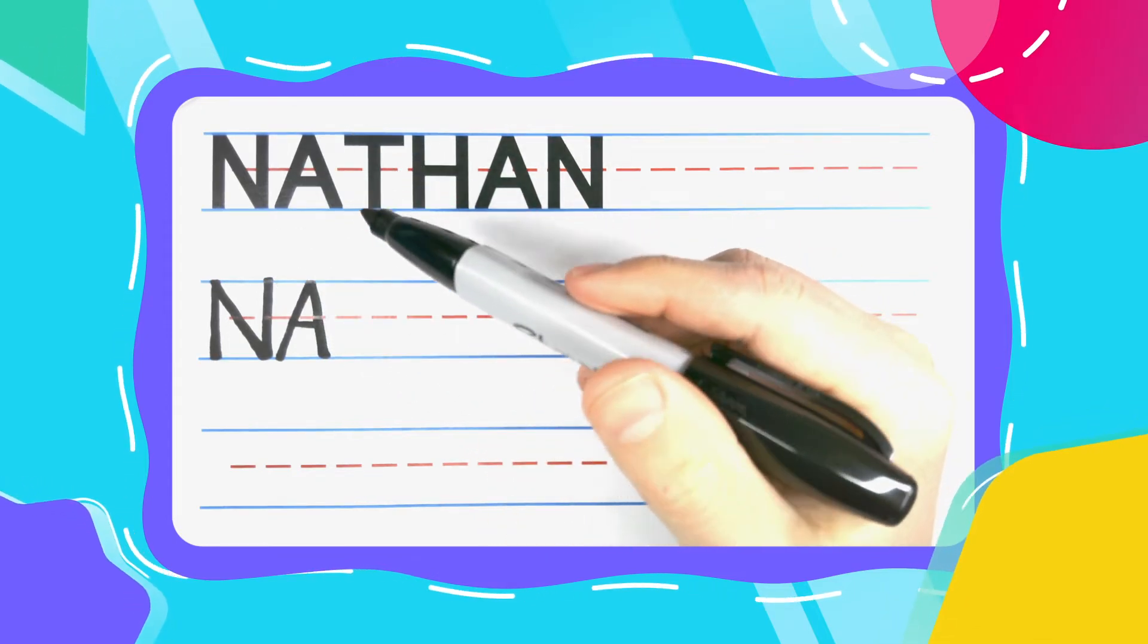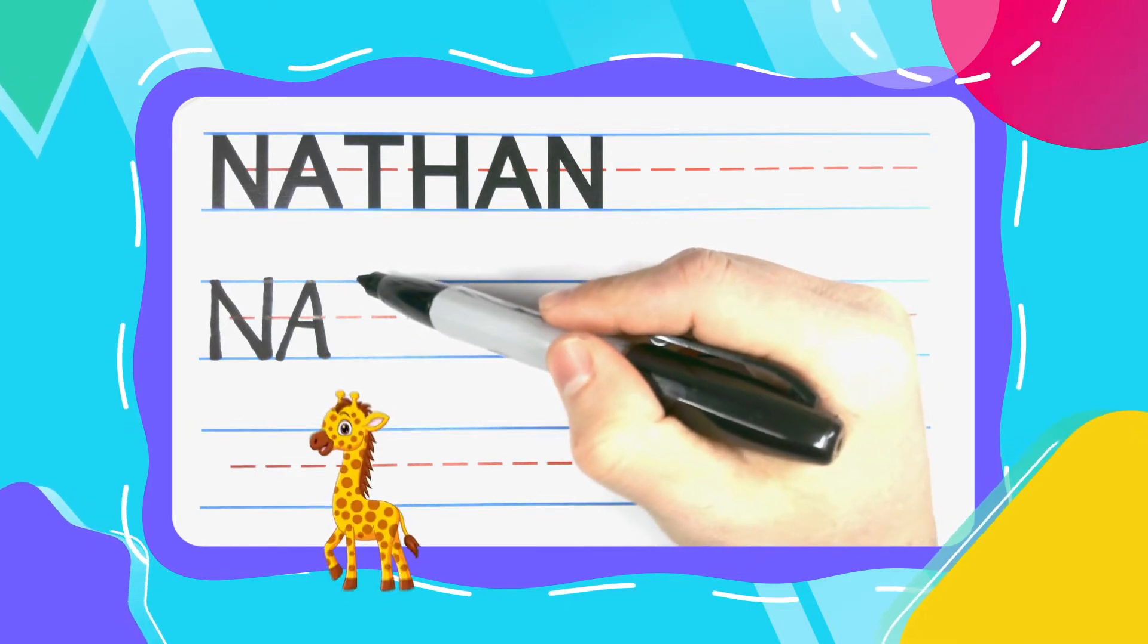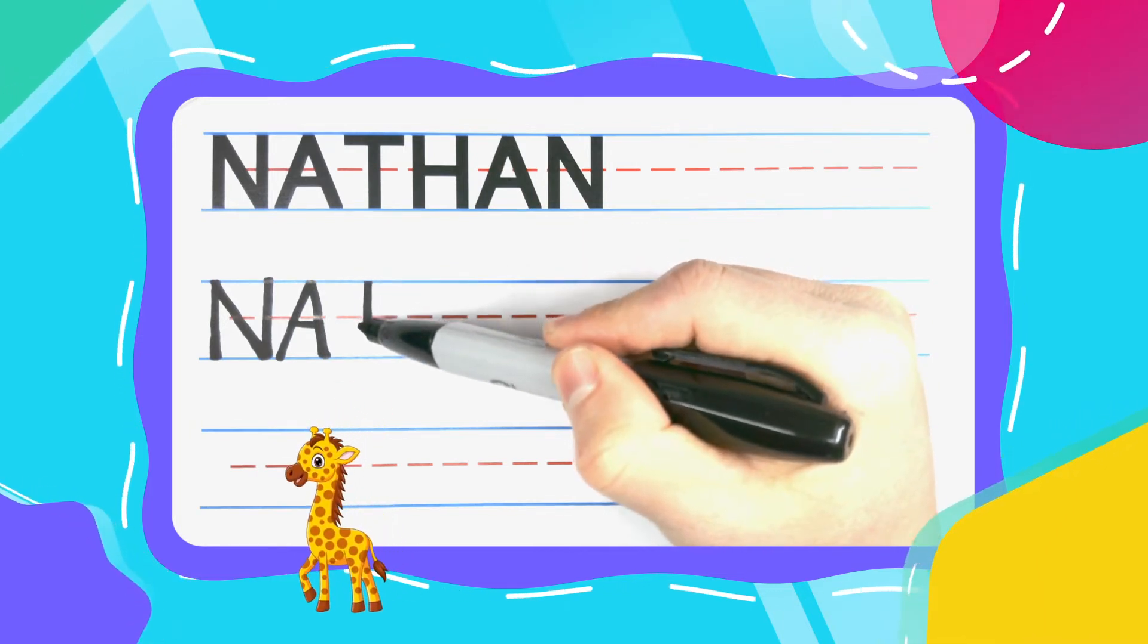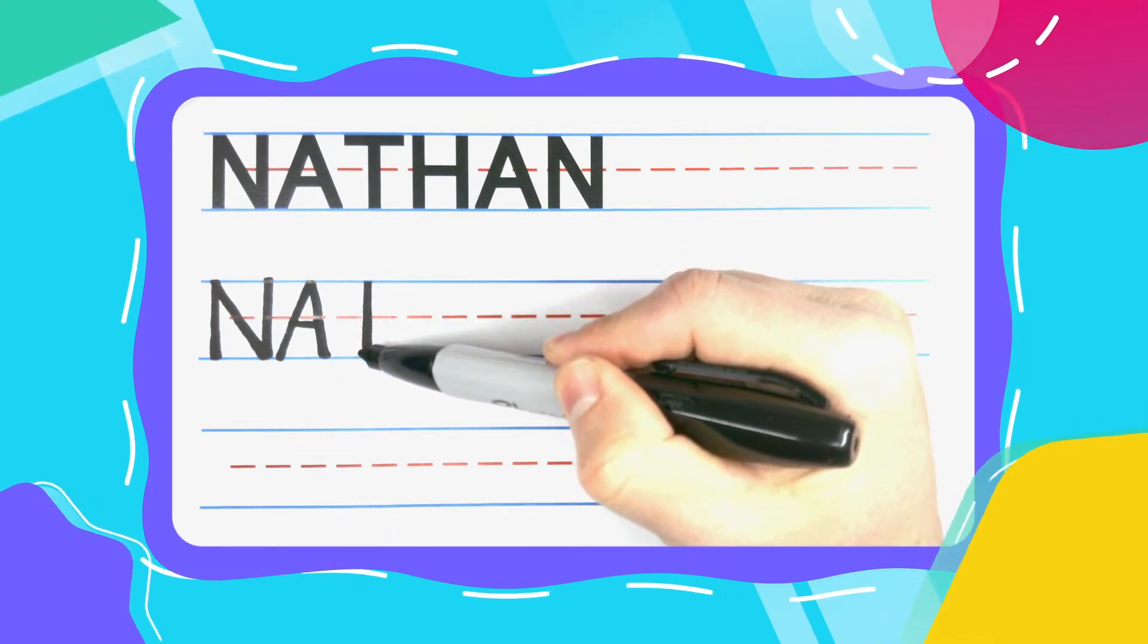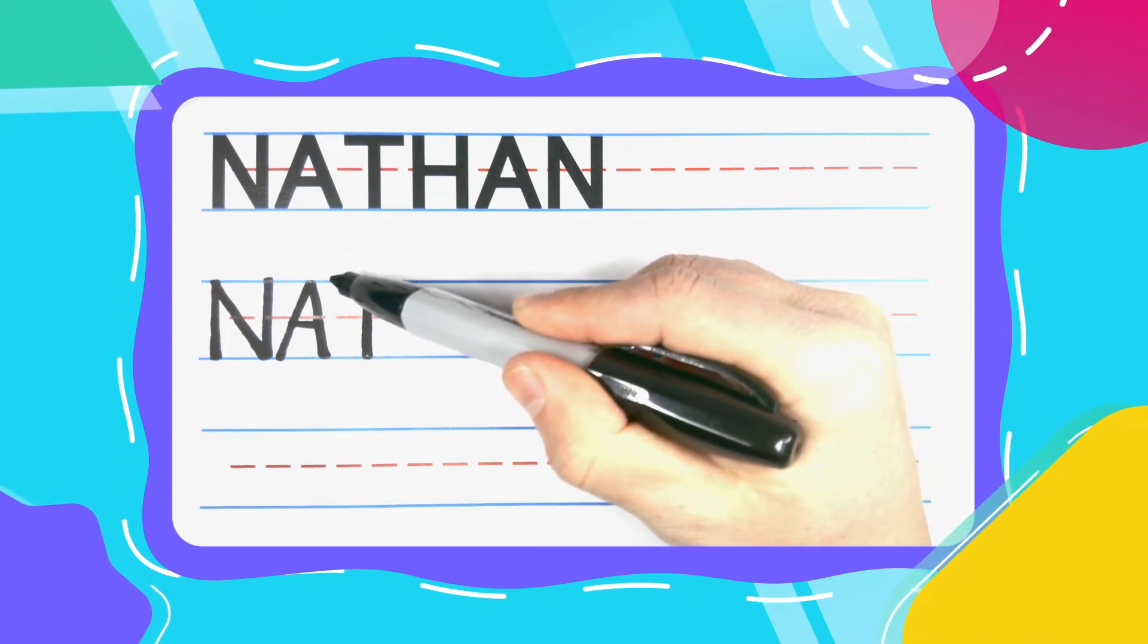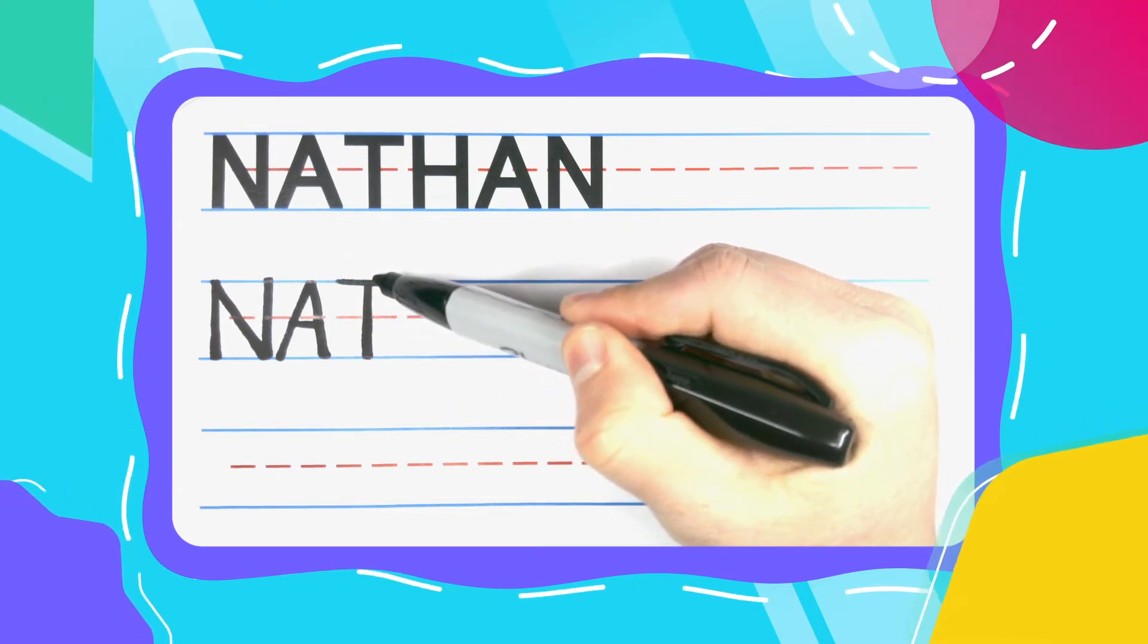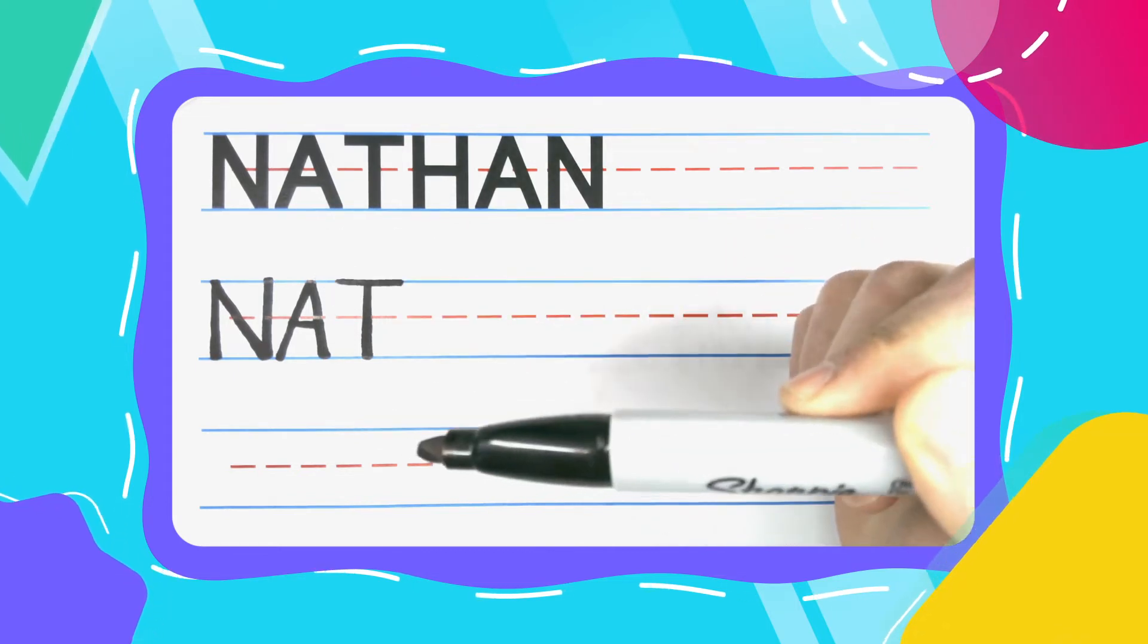The next letter in Nathan is the two tall T. Start your two tall T with a straight up and down line, come to the top, and draw a big Texas style cowboy hat on the top of your T.